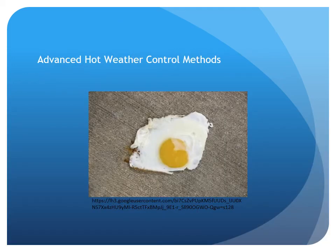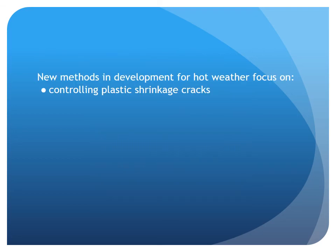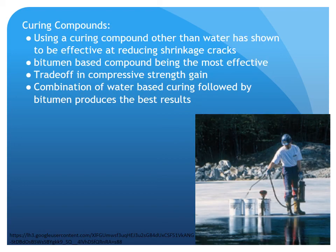Now on to advanced hot weather control methods. Most of the new methods in development for hot weather mostly focus on controlling plastic shrinkage cracks. Using a curing compound other than water has shown to be an effective way of reducing shrinkage cracks. Bitumen-based compounds have been shown to be the most effective, but there is a trade-off in compressive strength gain. So the best solution is to water-based cure for the first two days to gain that initial strength, followed by a bitumen product for best results.